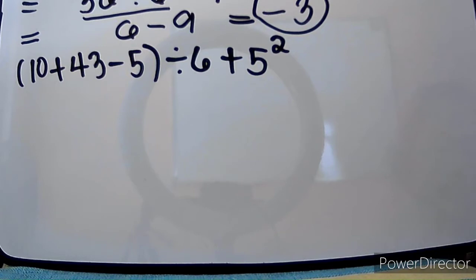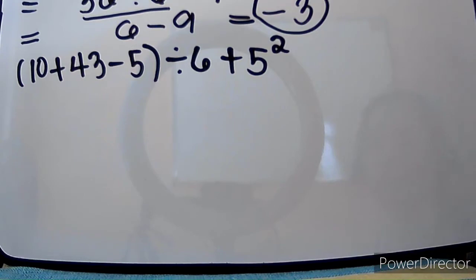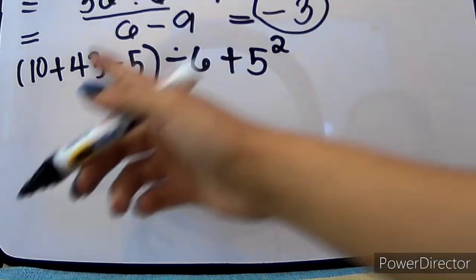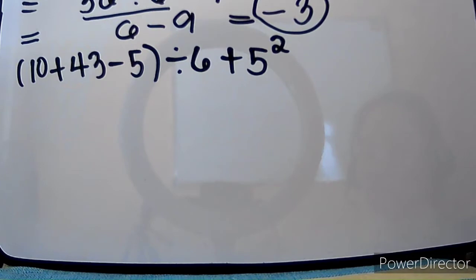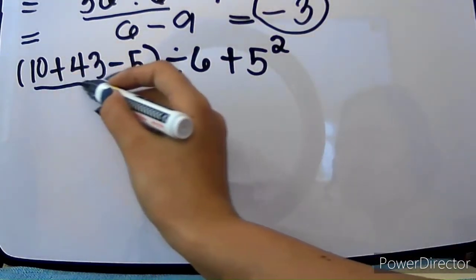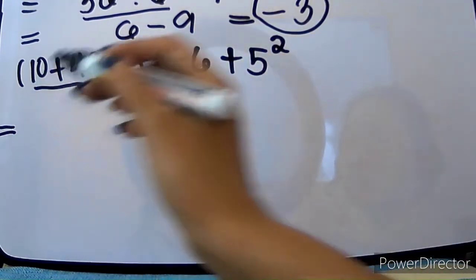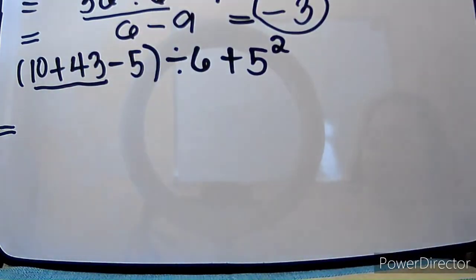Next is 10 plus (4 plus 3 minus 5) divided by 6, added by 5 squared. So, let's go back to our letter G. Meron tayong G, so let's do first — again, from left to right. Meron tayong addition and subtraction inside the parenthesis operation. We will do from left to right, kasi addition and subtraction lang naman ang ating operation.